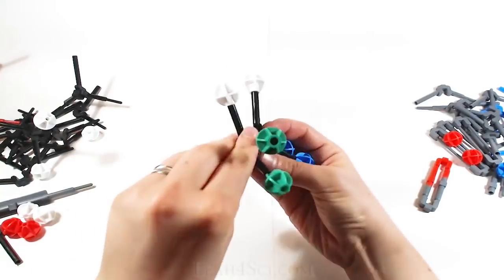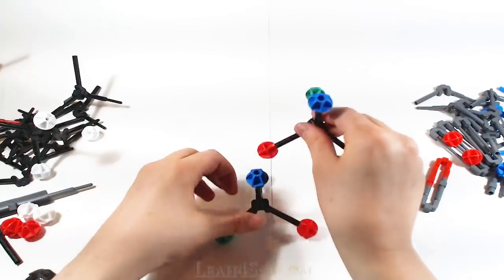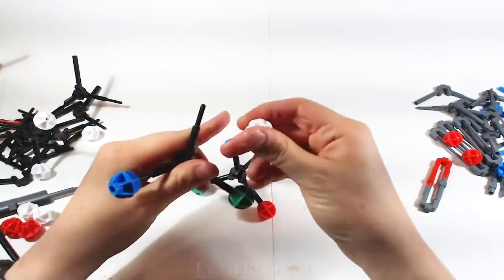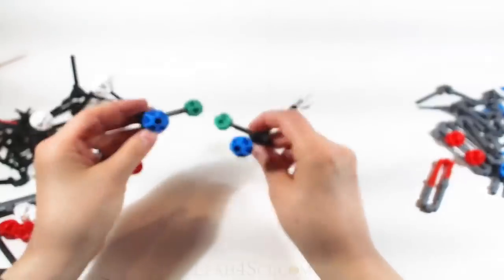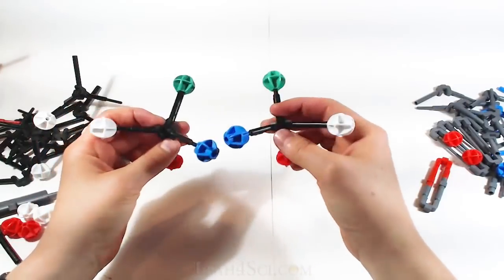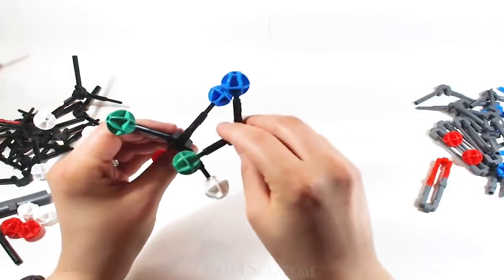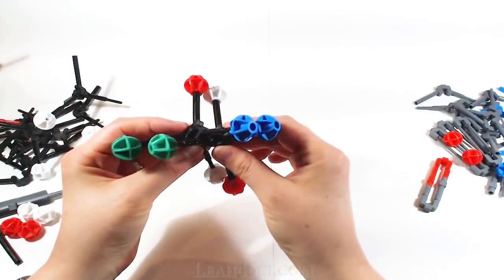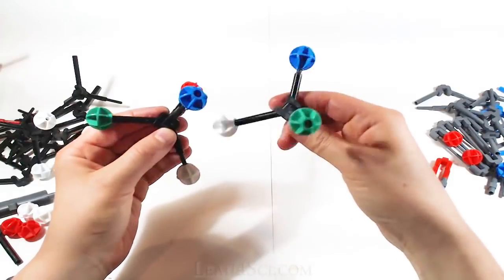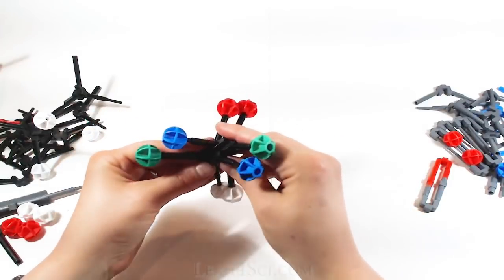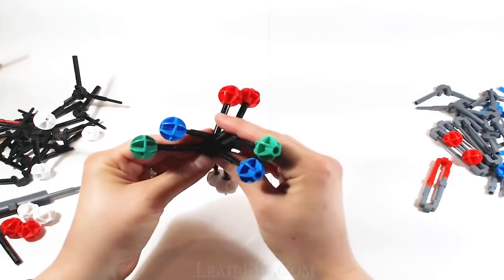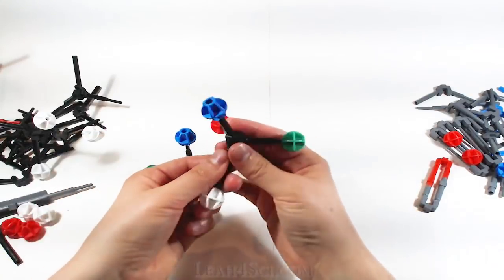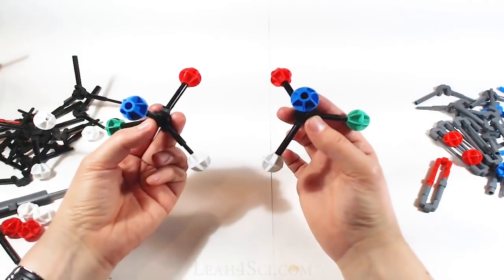Every color matches up with every color. To turn this into an enantiomer, we do one swap because remember, an odd number of swaps gives us the enantiomer. Now if I try to superimpose it, I line up the blue and the green. The red and the white are backwards. If I try to make the red and white line up, the blue and the green are backwards. So these are not superimposable because they're mirror images. And if I put them side by side, you can see they are mirror images.